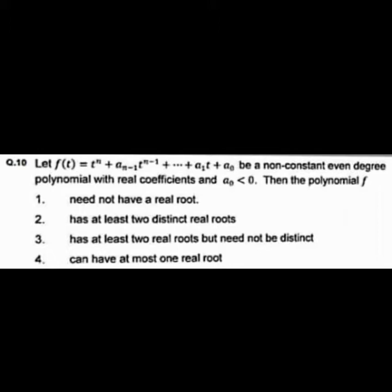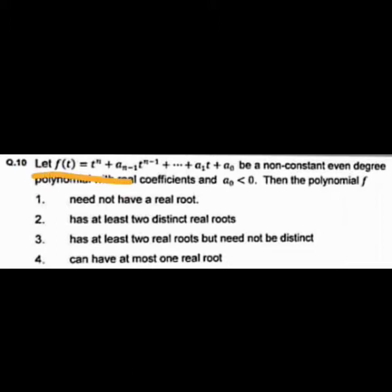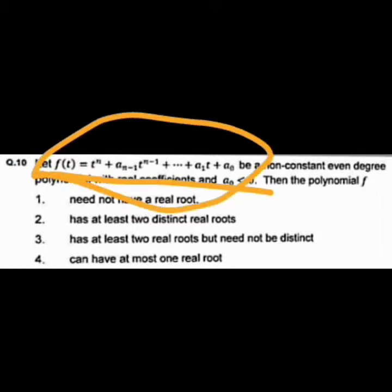So in the December 2019 Assam Higher Secondary question paper, Real Analysis Part B has a total of five questions, but in this video we will cover three questions. The first question: let f(t) = t^n + a_{n-1}t^{n-1} + ... + a_1t + a_0 be a non-constant even degree polynomial with real coefficients and a_0 < 0. Then the polynomial f: option A - does not have a real root; option B - has at least two distinct real roots; option C - has at least two real roots but need not be distinct; option D - can have at most one real root.